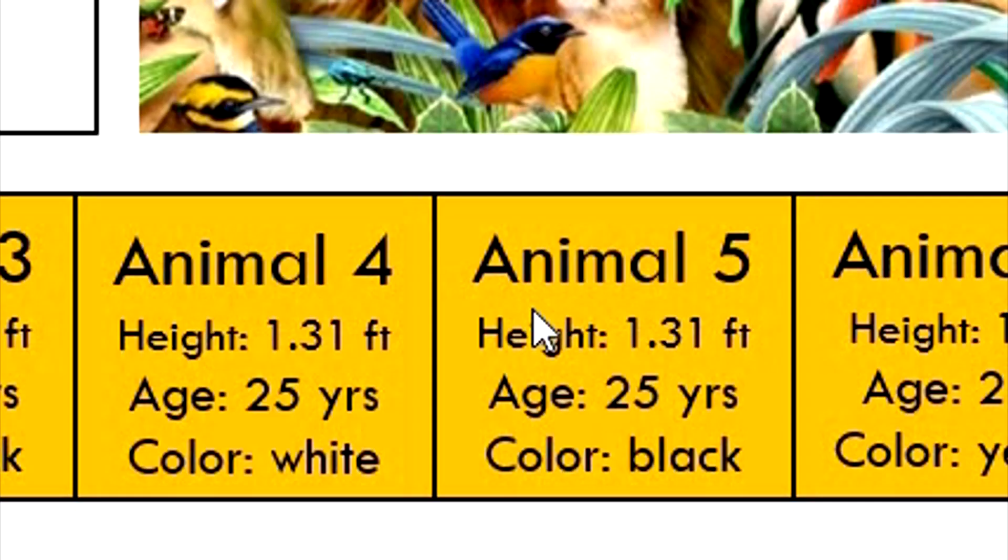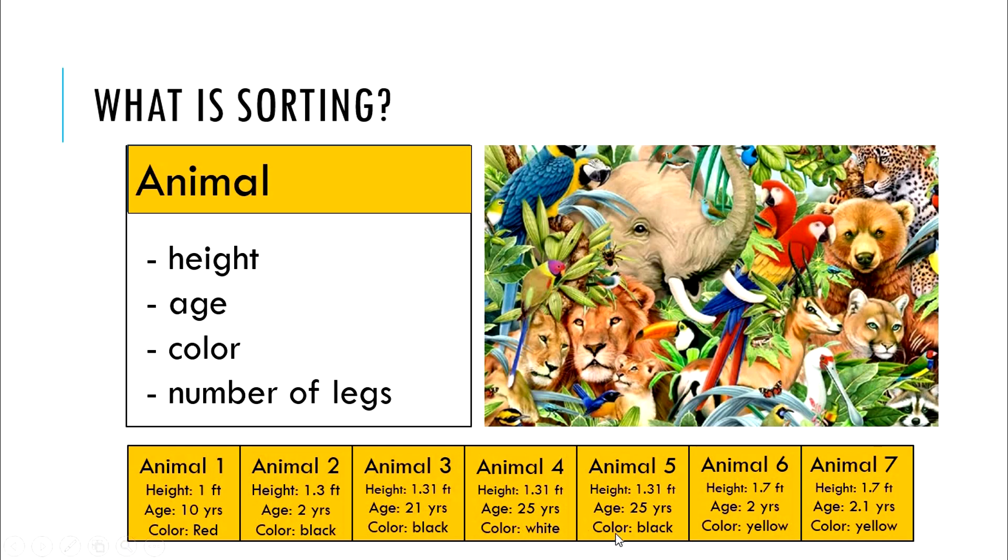Now animal 5 has the same height and age as animal 4. So we compare them using the third sorting criteria, the color. Since animal 4, which is white, has lighter color compared to animal 5, which is black, it is sorted before animal 5.